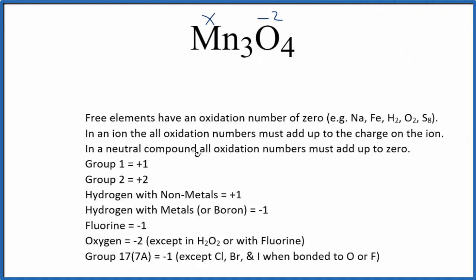Because this is neutral, the whole compound, the oxidation numbers are going to add up to zero. So we can just set up an equation. We could say 3x minus two times the four, all of that equals zero. So we have 3x minus eight equals zero.